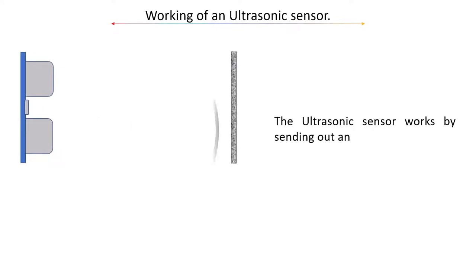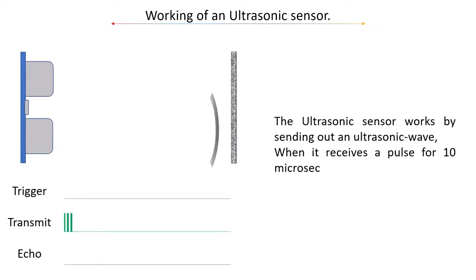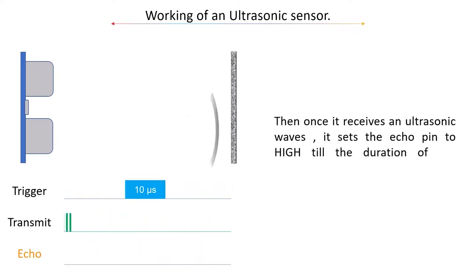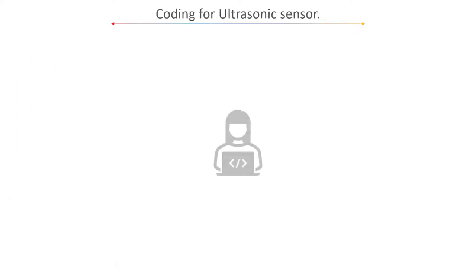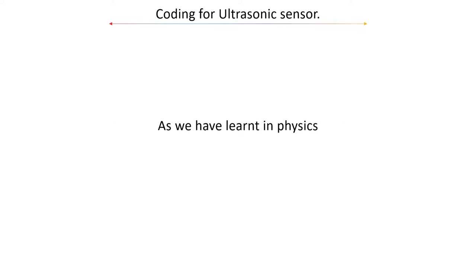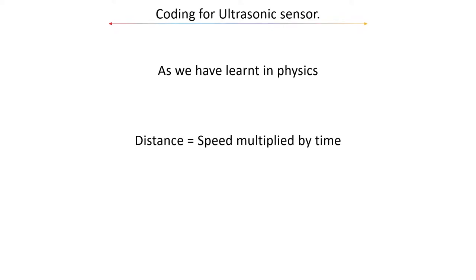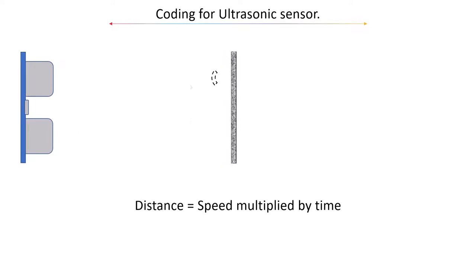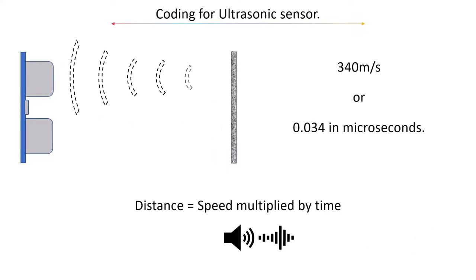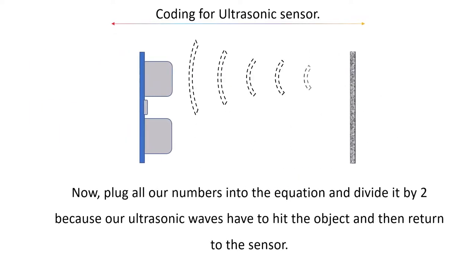The ultrasonic sensor works by sending out an ultrasonic wave when it receives a pulse for 10 microseconds. Once it receives the returning wave, it sets the echo pin to high for the duration of the incoming pulse. To calculate distance, we use the physics formula: distance equals speed multiplied by time. The speed of ultrasonic waves is the speed of sound in air — 340 meters per second or 0.034 in microseconds. We plug the numbers into the equation and divide by 2 because the ultrasonic waves must hit the object and return to the sensor.